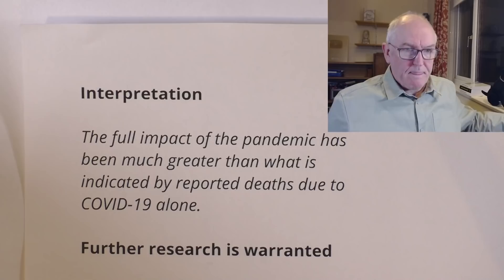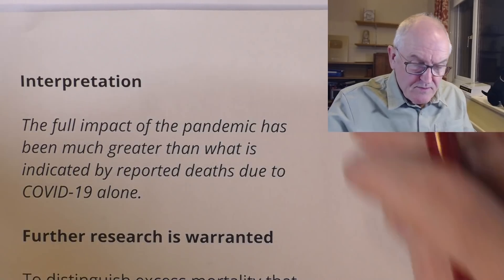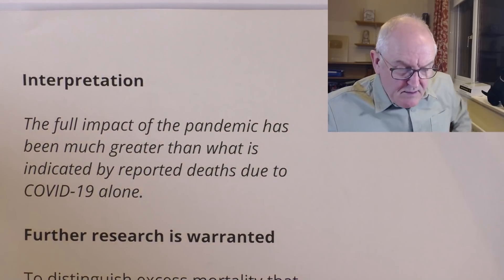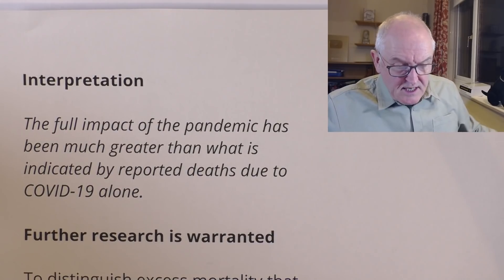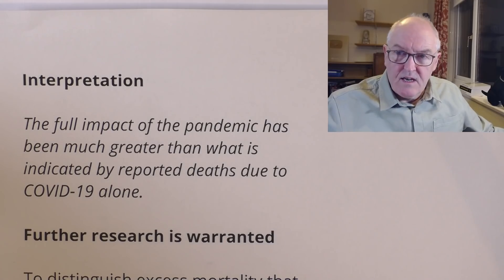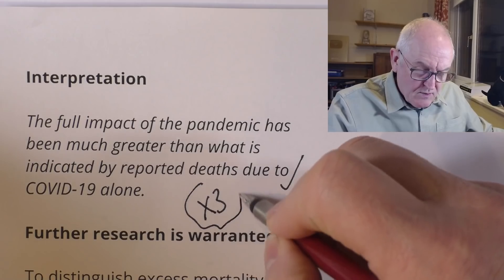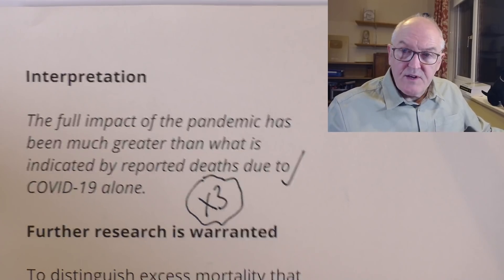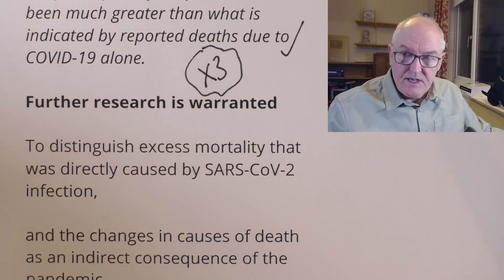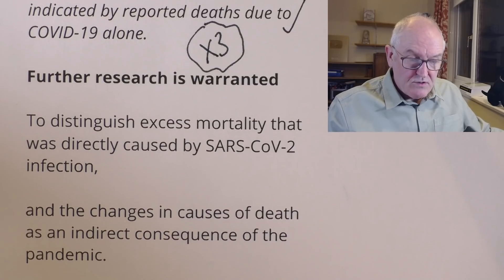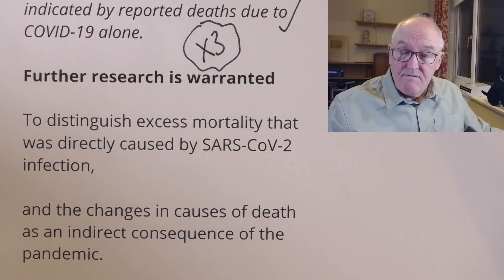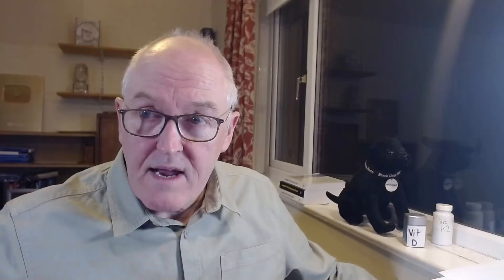The direct quote from the authors: 'The full impact of the pandemic has been much greater than what is indicated by reported deaths due to COVID-19 alone.' We've known this for a while, but we didn't realise it was three times higher globally — so it is a lot. Further research is warranted to work out what's going on: is it caused by collateral damage, or is COVID-19 and its various strains and waves more pathogenic than we originally thought?